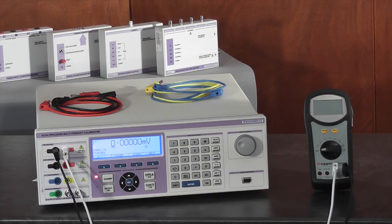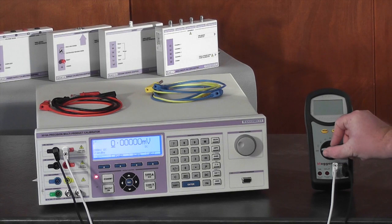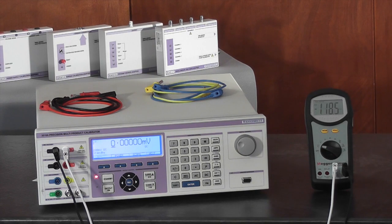We will start with a value of 1 volt DC. Firstly, select the correct range on the multimeter.